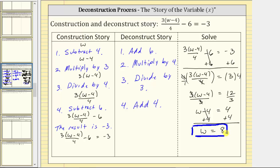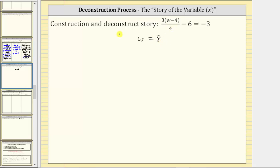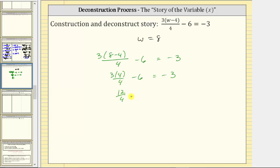Let's verify this solution by substituting eight for w in the original equation. Substituting eight for w gives us three times the quantity eight minus four divided by four minus six equals negative three. Simplifying, eight minus four is four, giving us three times four divided by four minus six. Three times four is 12; 12 divided by four is three; three minus six is negative three. So negative three equals negative three, which is true, verifying our solution is correct. I hope you found this helpful.